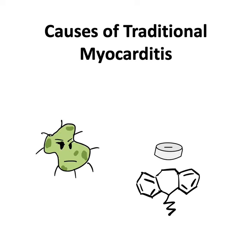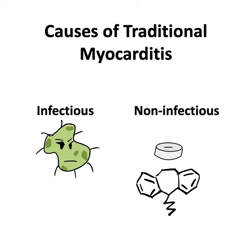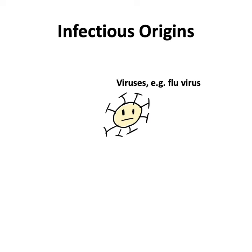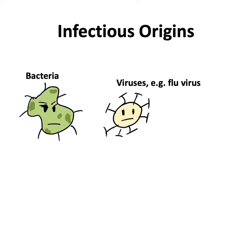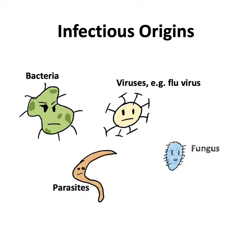Both infectious and non-infectious agents can cause common traditional myocarditis. Infectious origins include common viruses such as the flu virus, bacteria, parasites, fungal agents, and protozoal agents.